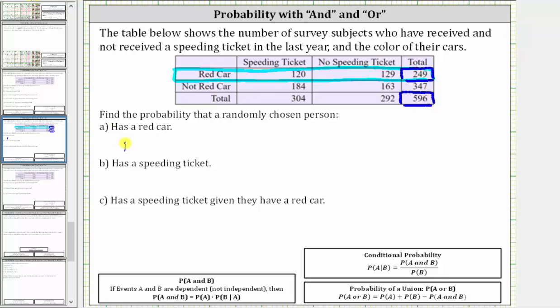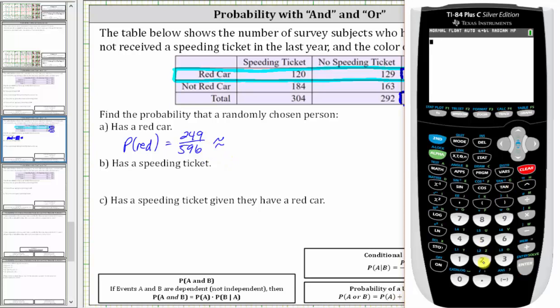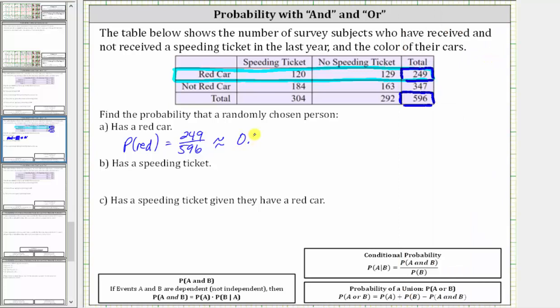So we'll say the probability of red is equal to 249 divided by 596. Let's also find the decimal and percentage. 249 divided by 596, rounded to four decimal places, is approximately 0.4178, which is 41.78%.